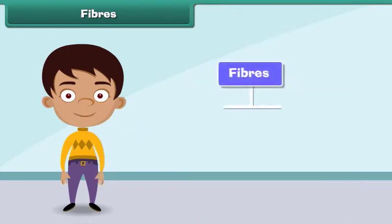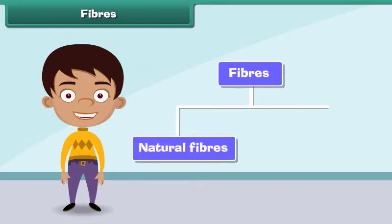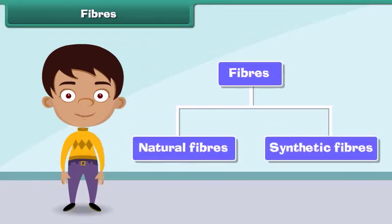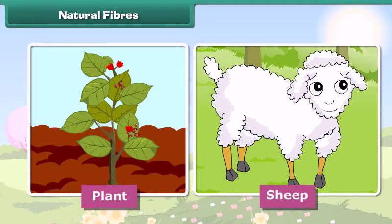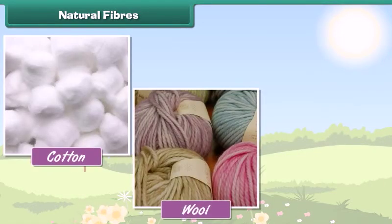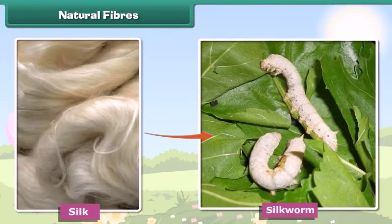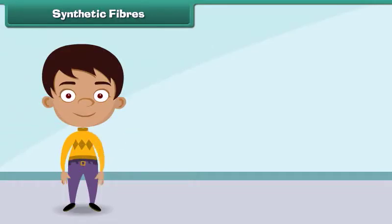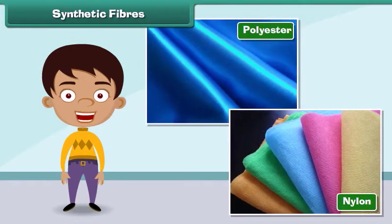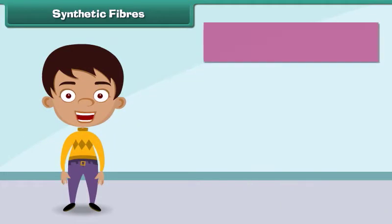Fibers are of two types: natural fibers and synthetic fibers. Natural fibers are made from plants and animals. Cotton is obtained from plants, wool is obtained from sheep, goats, and camels, and silk is obtained from silkworms.